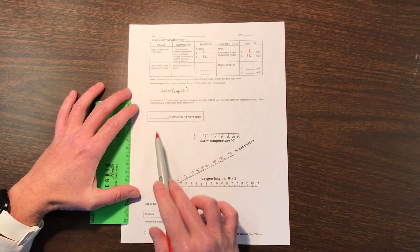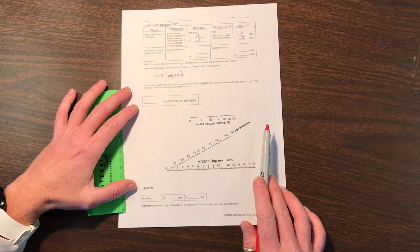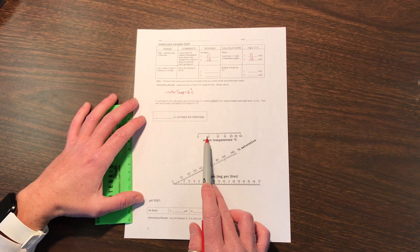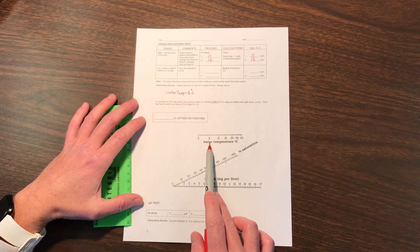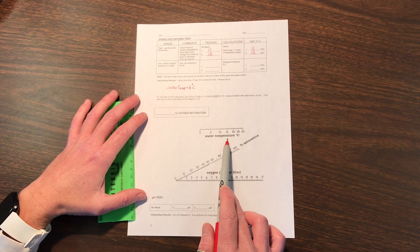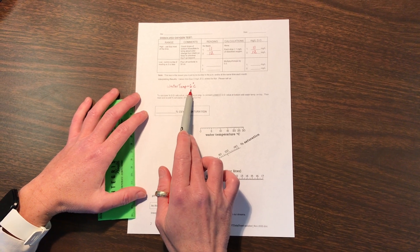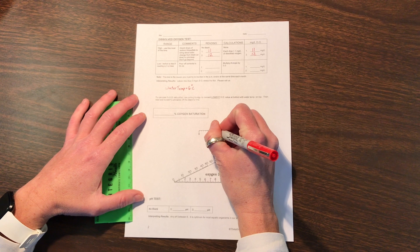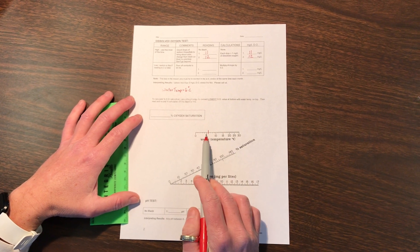Now to use this chart here on the center of page 2, this top axis line is for the water temperature. We want to make a mark at—we had our water temperature at 6 degrees Celsius. So we will make a mark there at 6.